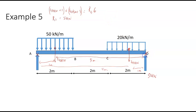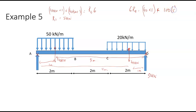If I take the moments about D, I would say that clockwise we have 6 R_A, which is equal to 40 by one plus 100 by five. That's 540 divided by six, which is 90. So that's 90 kilonewtons and R_D is 50 kilonewtons. Let's tidy up the slide now.